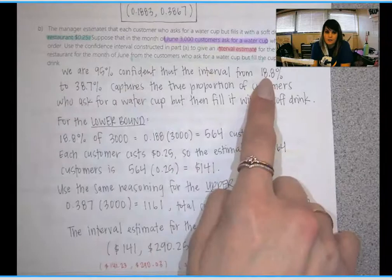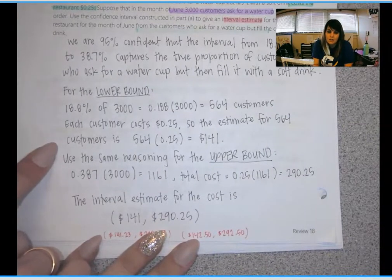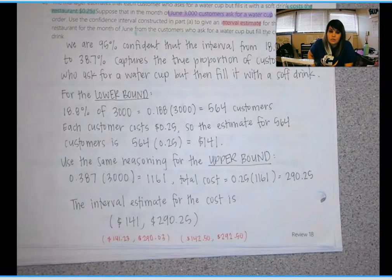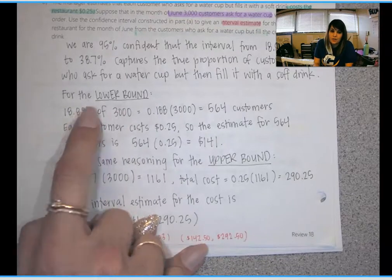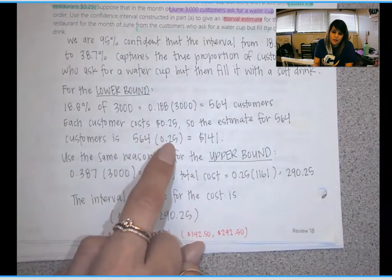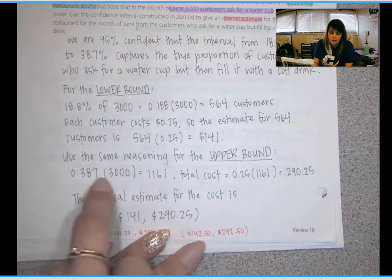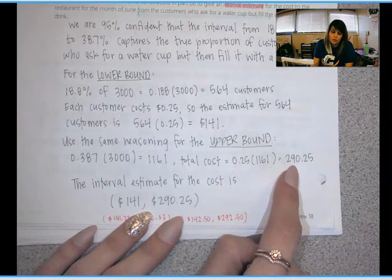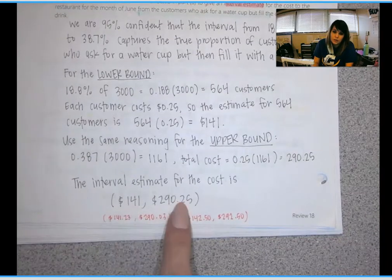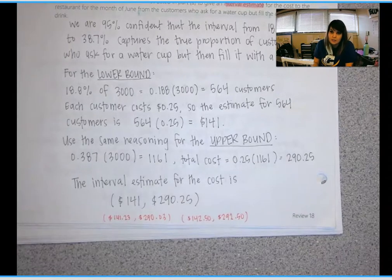Well, then they go on to say that they think that each customer that does this costs them 25 cents. So they give you a specific amount of customers and want you to now use this confidence interval to make an interval of the actual cost that these customers generate. So I'm explaining what our confidence interval told us. And then here, I'm mostly writing this down for you guys. But if I had time, I would write this on my test. So we know that between 18.8% and 38.7% of our customers will do this. So if we have 3,000 customers, 18.8% of that is 564. Well, each of those guys costs us 25 cents. So we do 564 times the 25 cents. That gives us a lower bound of $141. Using the same reasoning, I get an upper bound of $290. So these customers in the month that was given, in the month of June, cost this business between $141 and $290 just by asking for a water cup and then filling it with soda. How interesting. This is why I like stats. Because this interests me. But I might just be a boring person.